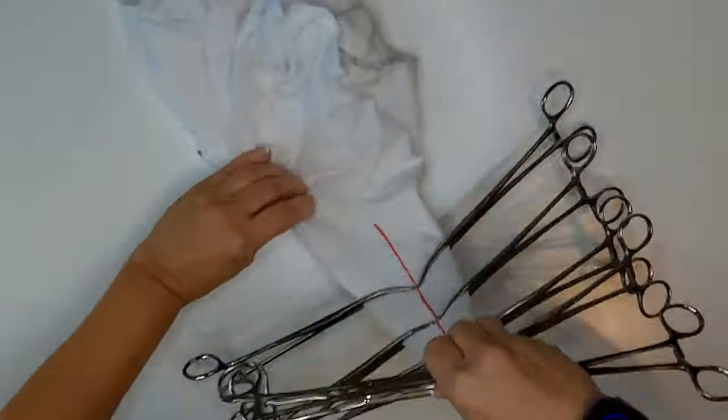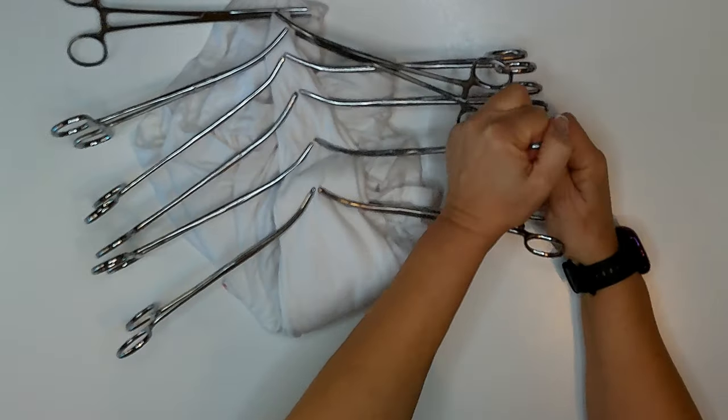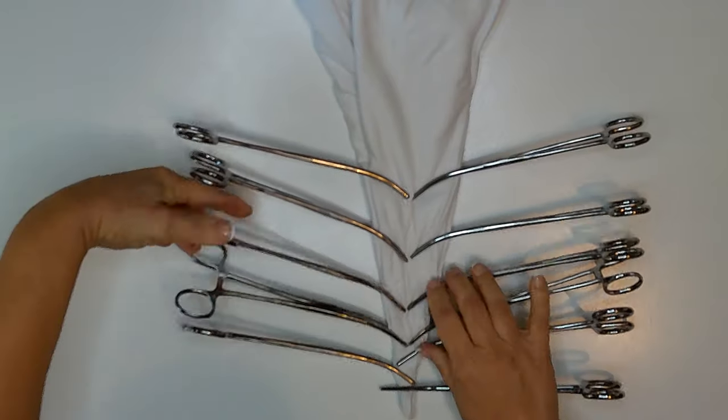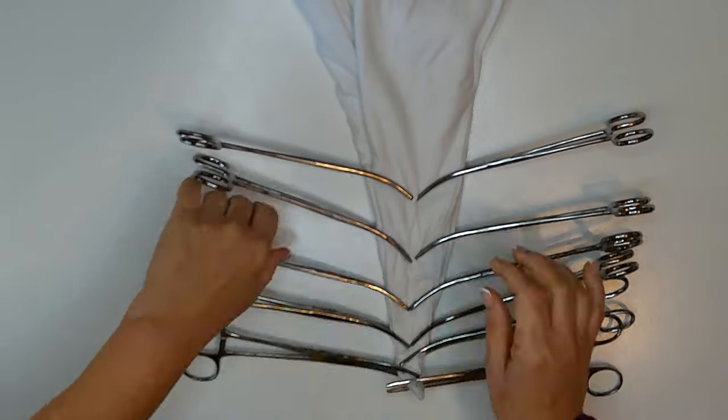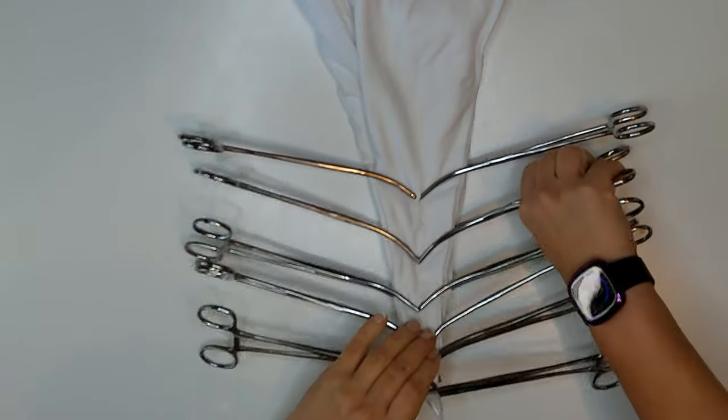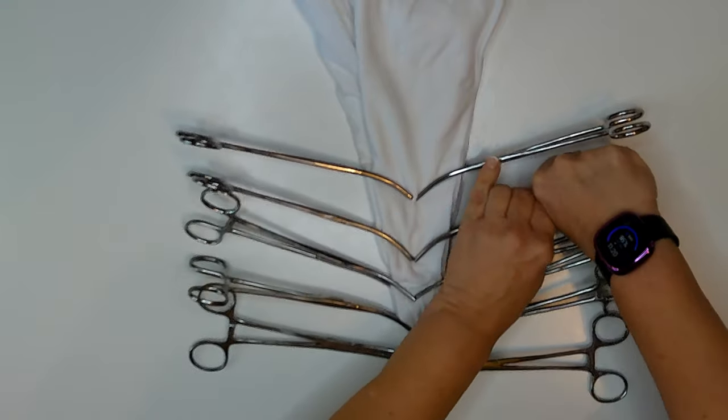One thing that I learned while I was doing this technique is that I need to check the back of the hemostat area. Some of the hemostats folded in little creases as I applied them, and I couldn't see the wrinkles and ripples from the front.